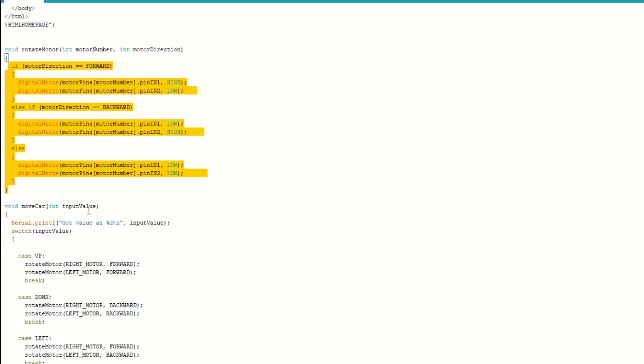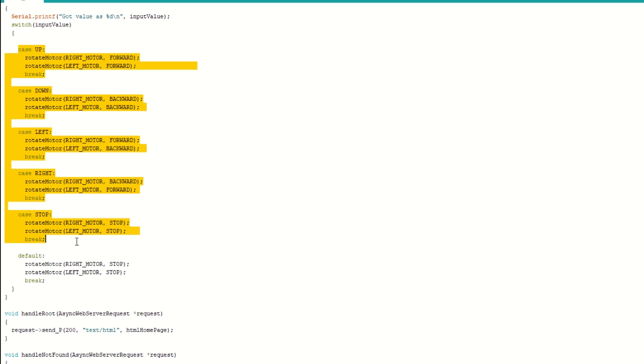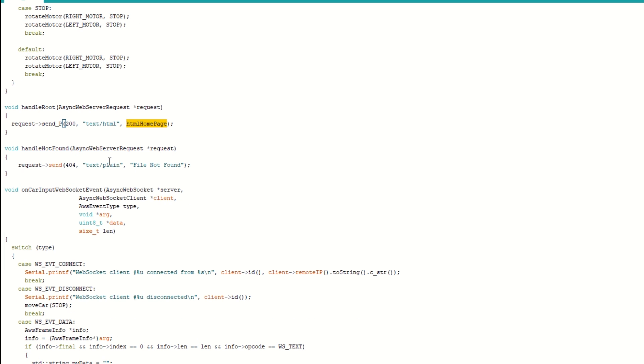We have created a rotate motor function which takes motor number and direction as arguments. It will rotate the motor in forward or backward direction accordingly. Then we have a move car function which takes commands like up, down, left, right, stop and moves the car.